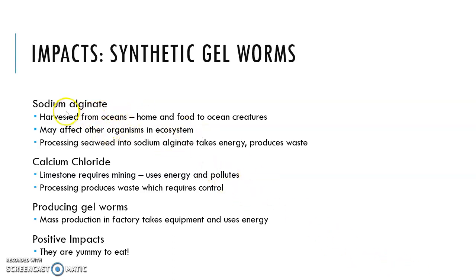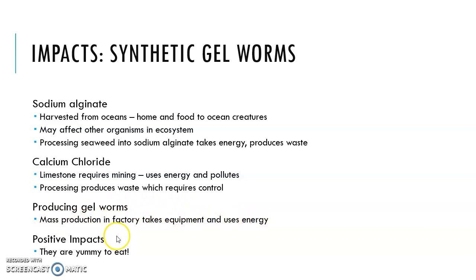When we do these chemical processes, there are always unintended consequences. Harvesting seaweed from the ocean disrupts home and food sources for ocean creatures, displacing animals in the ecosystem. Processing seaweed takes energy and produces waste. Mining limestone — as in Nevada where you can see big mountains that are cut up — disrupts ecosystems. Waste products must be controlled so they don't run into our rivers. As consumers, we need to ensure synthetic materials we create don't have such negative impacts that we're later trying to fix the problems we created.